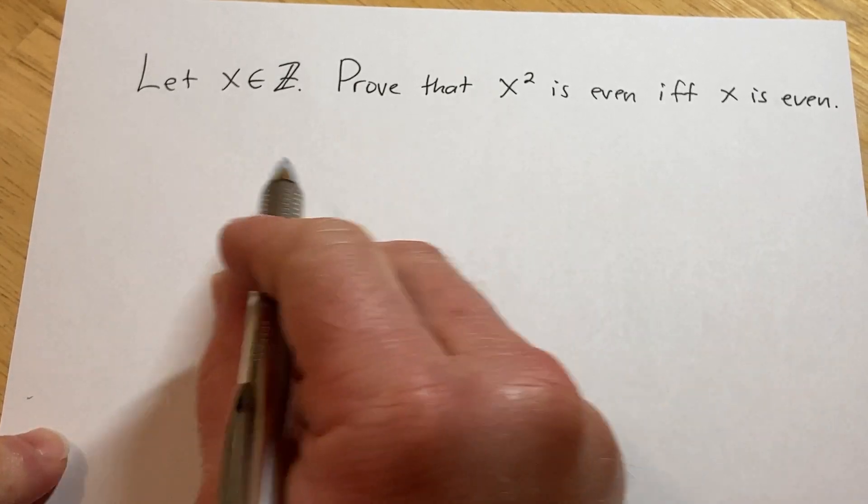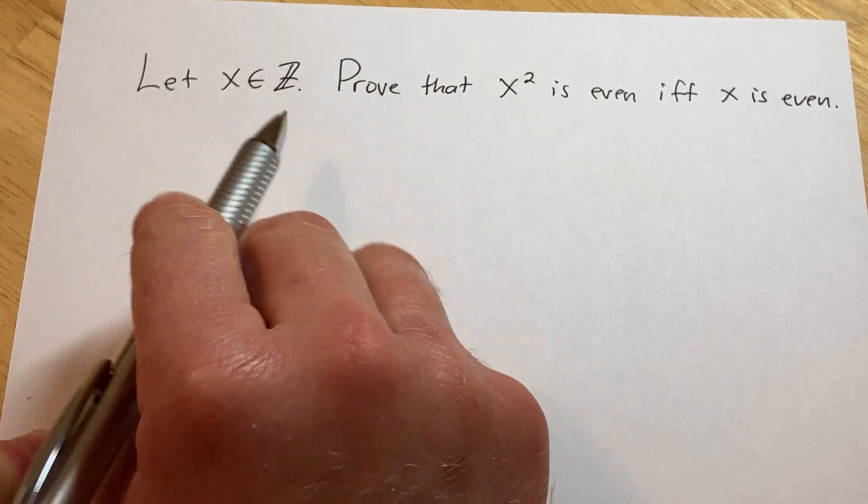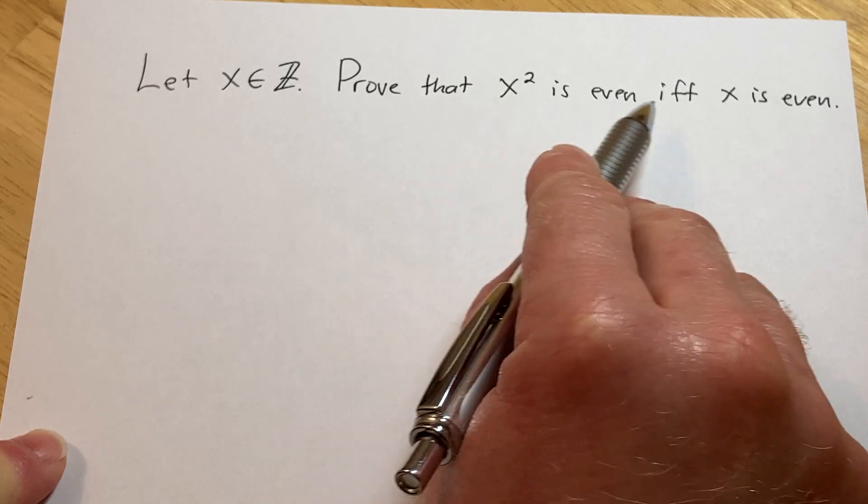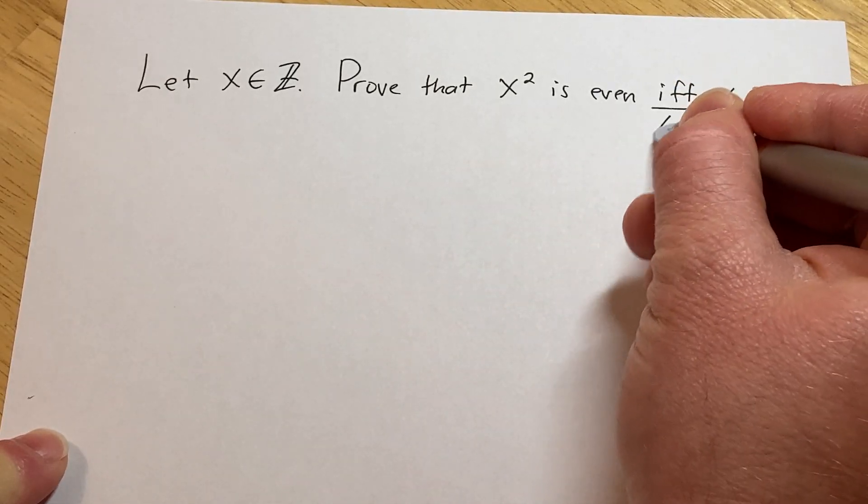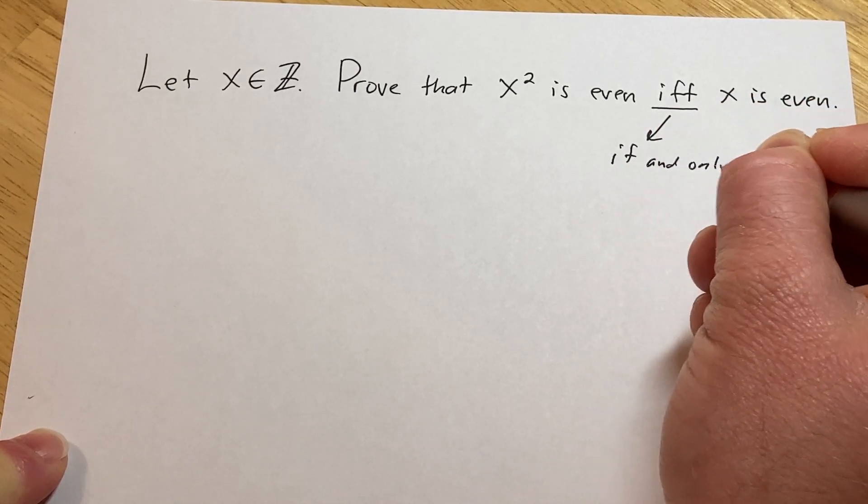Hi, in this video we're going to do a proof. So we're told that x is an element in the set of integers, and we're being asked to prove that x squared is even if x is even. So this means if and only if.